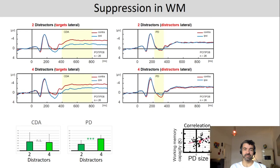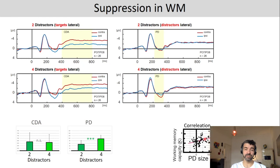This is also reflected in a correlation: PD amplitude on the x-axis, working memory capacity of individuals on the y-axis. An individual with relatively low working memory capacity also shows relatively low PD amplitude — reflecting low suppression. A participant with a very large PD, indicating a lot of suppression, also has a high working memory capacity k. This suggests that successful and efficient suppression of distractors contributes to working memory performance.